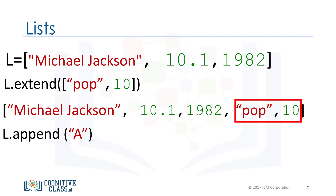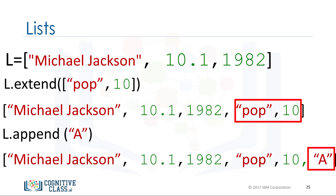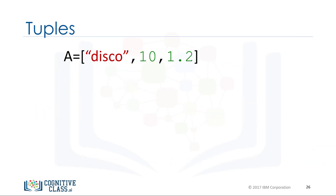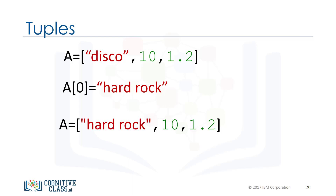If we append the string 'A', we further change the list, adding the string 'A'. As lists are mutable, we can change them. For example, we can change the first element as follows. The list now becomes 'hard rock, 10, 1.2'.